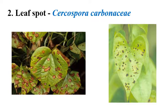The next disease is leaf spot caused by Cercospora carbonaceae. As the name indicates, spots can be seen on the leaves — brown to black color spots appear initially. Later, these small spots coalesce and appear as very big spots in the later stages.